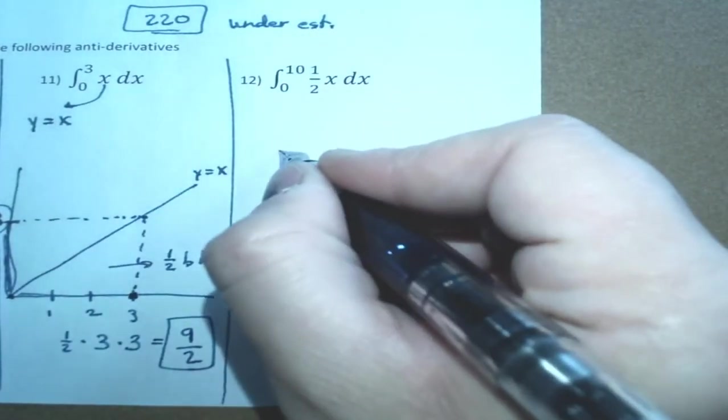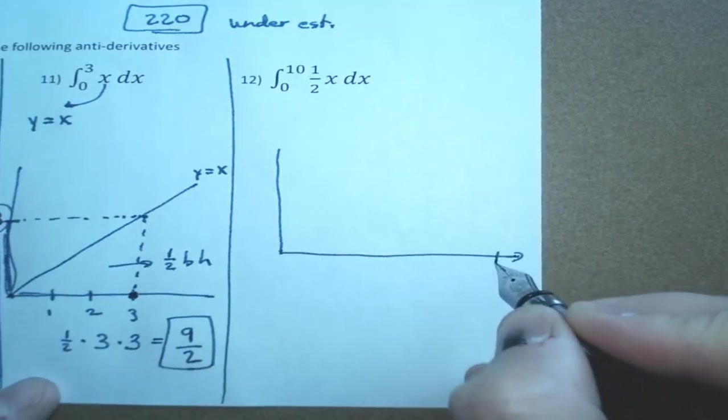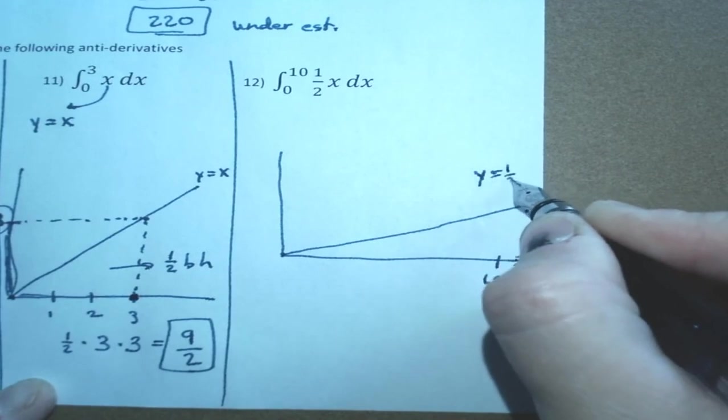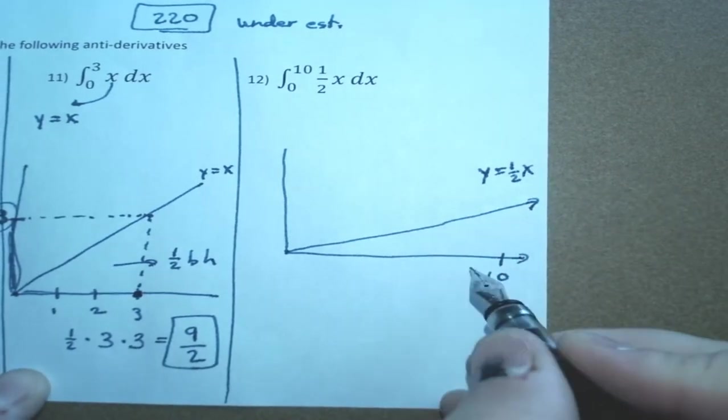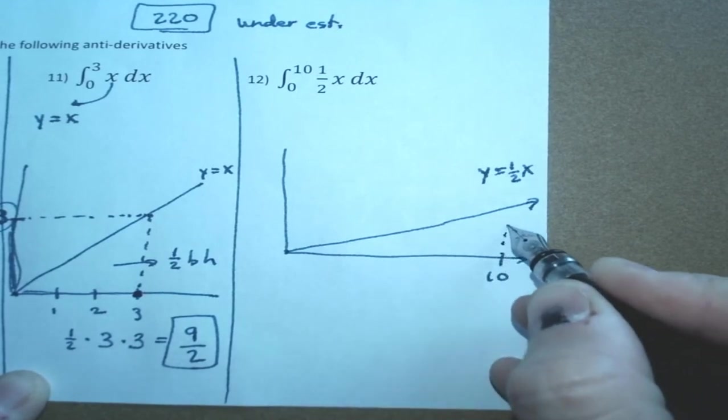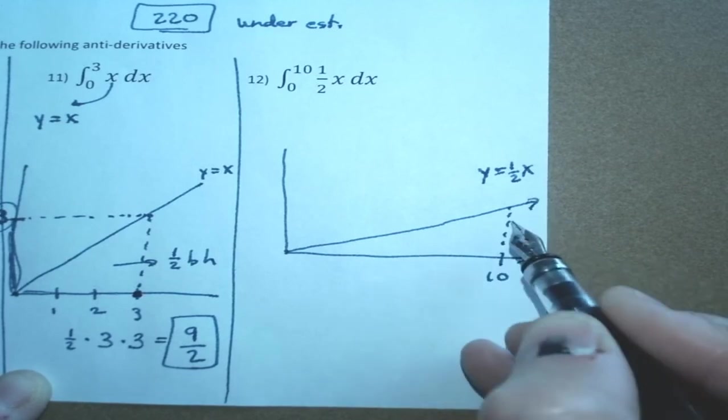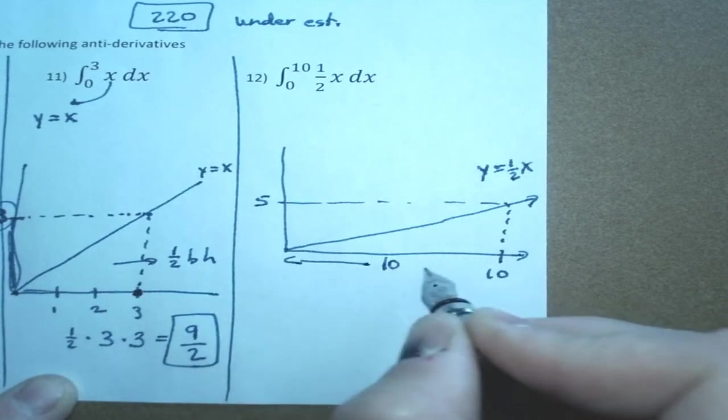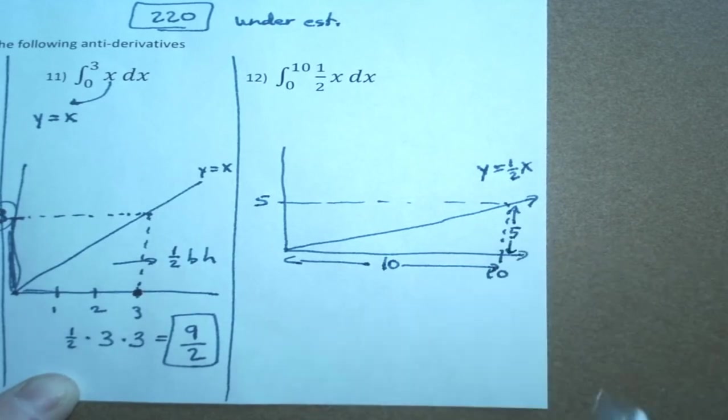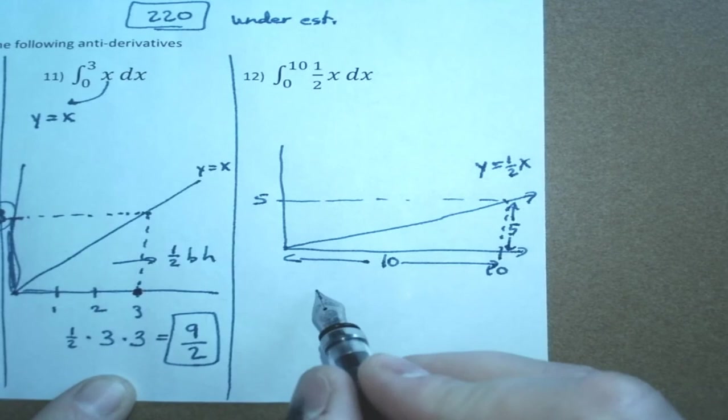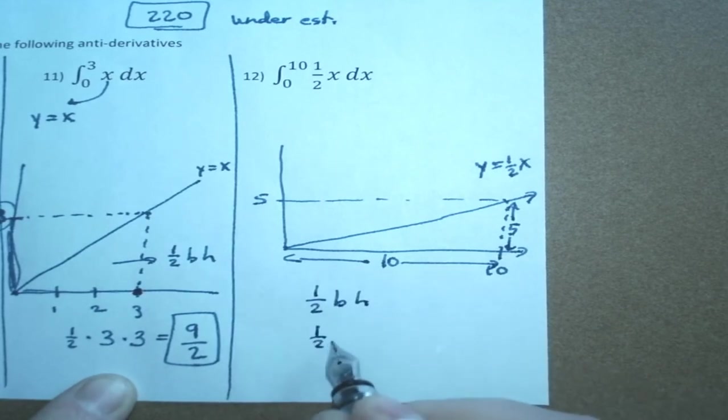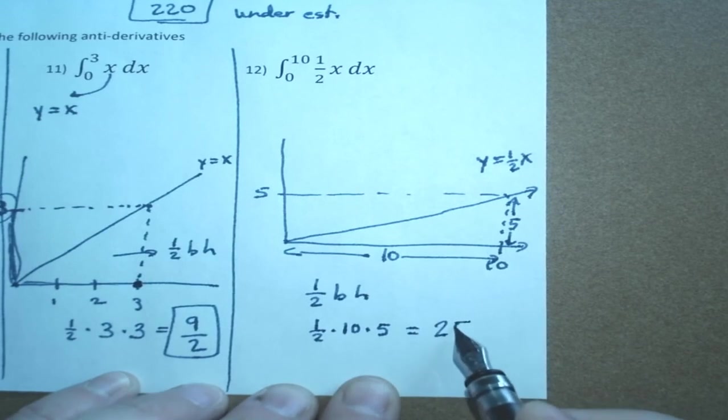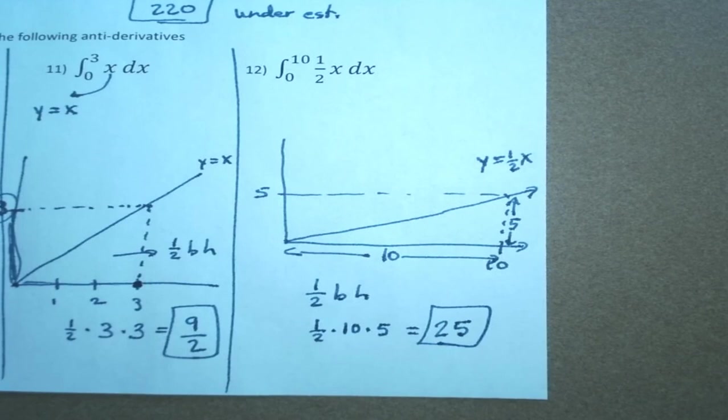Last one here. We're going to x equals 10. And this is y equals 1 half x. Y equals 1 half x. And so, again, it's a straight line. And if this is 10, half of 10 is 5. So what do we know? This is 10, and this is 5. And it's a triangle. So the area is 1 half base times height, which is 1 half times 10 times 5. And 1 half of 10 times 5 is 25. So using geometry.